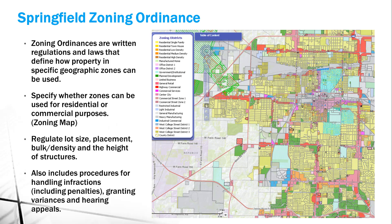There are actually six different types of residential zoning: residential single family - that's what most of us live in - residential townhouse, low density like duplexes, medium density, high density like big apartment complexes, and manufactured homes has its own category. We also have office districts and government and institutional. OTC, for example, is classified as government institutional, so we have special requirements for this area.